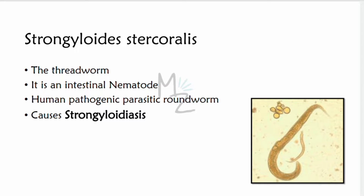Strongyloides has many species, but the one that commonly affects humans is Strongyloides stercoralis. Its second name is Threadworm. It is an intestinal nematode — the human pathogenic parasitic roundworm — responsible for causing strongyloidiasis. In the picture, you can see the Strongyloides stercoralis worm. We'll discuss its structure in the morphology section.